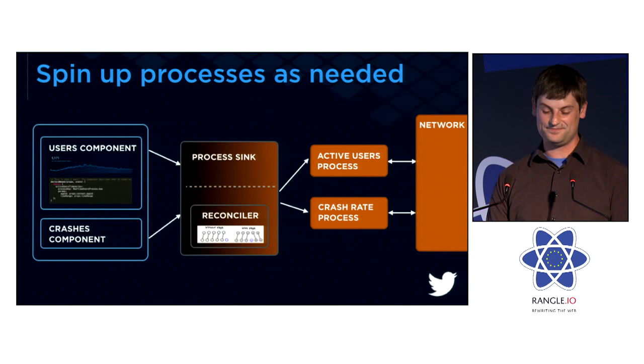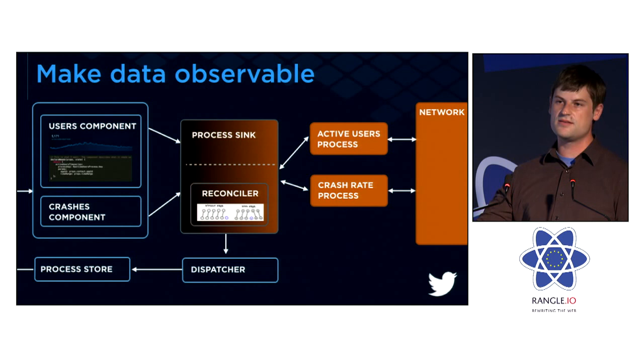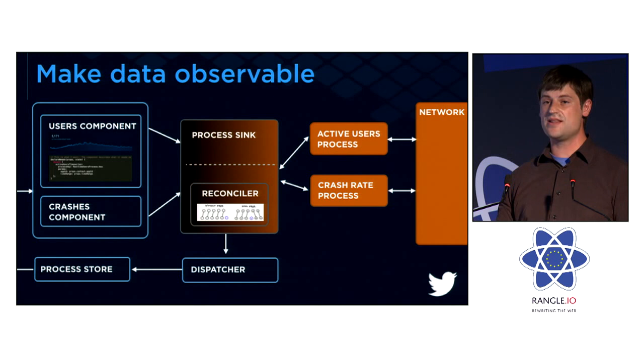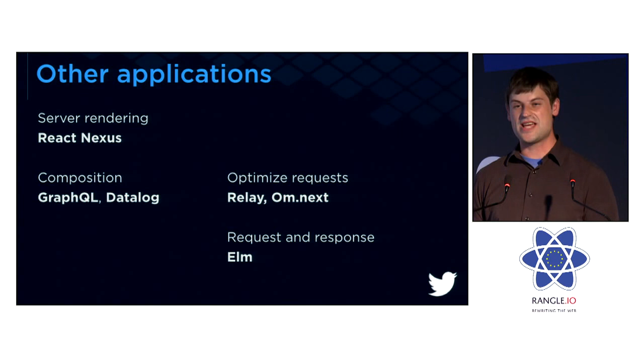On the read path, processes have an API where they can be started, stopped, and emit data in a certain shape. That will flow through a dispatcher in standard Flux style and be kept in a process store. Components can then sideload that as if it's an observable and pull it into their component state. Importantly, the process store is not a cache — all it's trying to do is make it so that when a new component comes to life, it can read the last value that's flowed through the system.